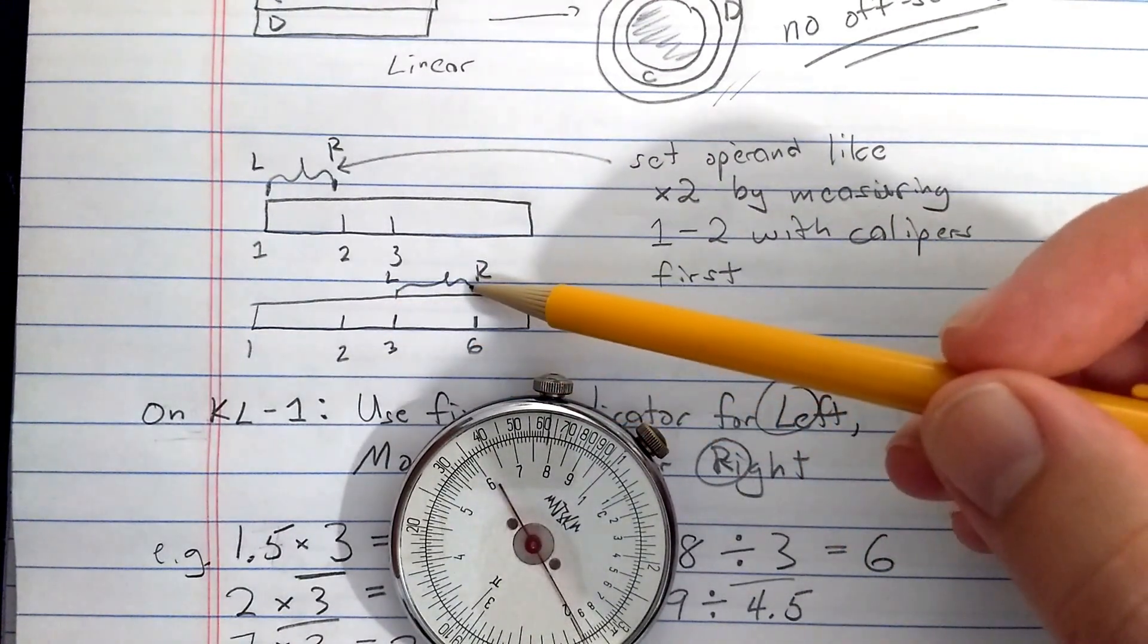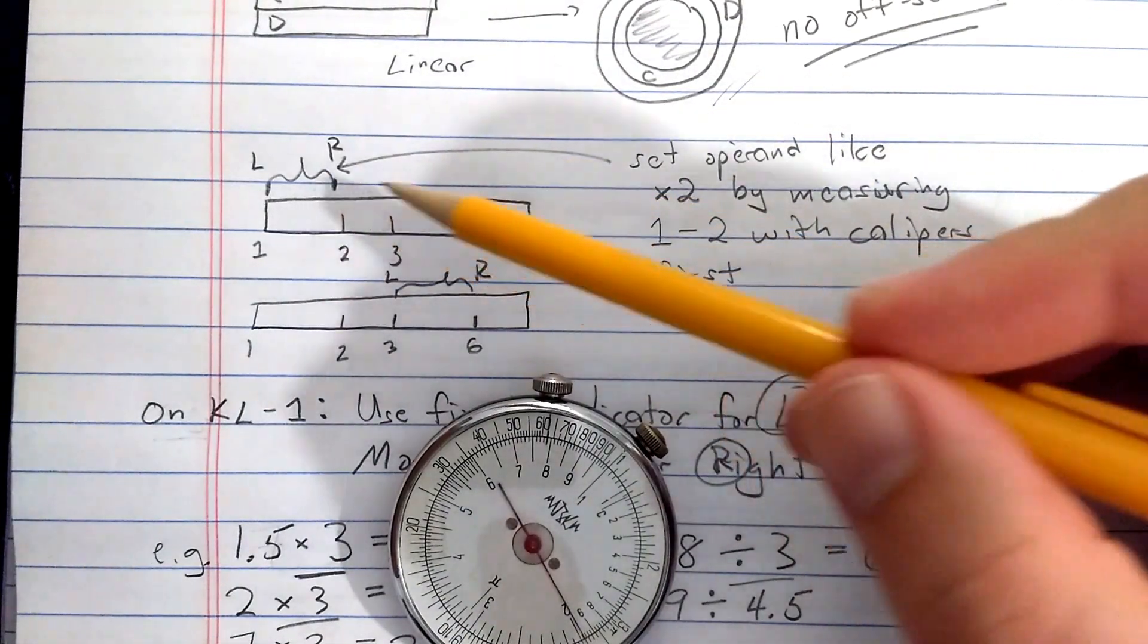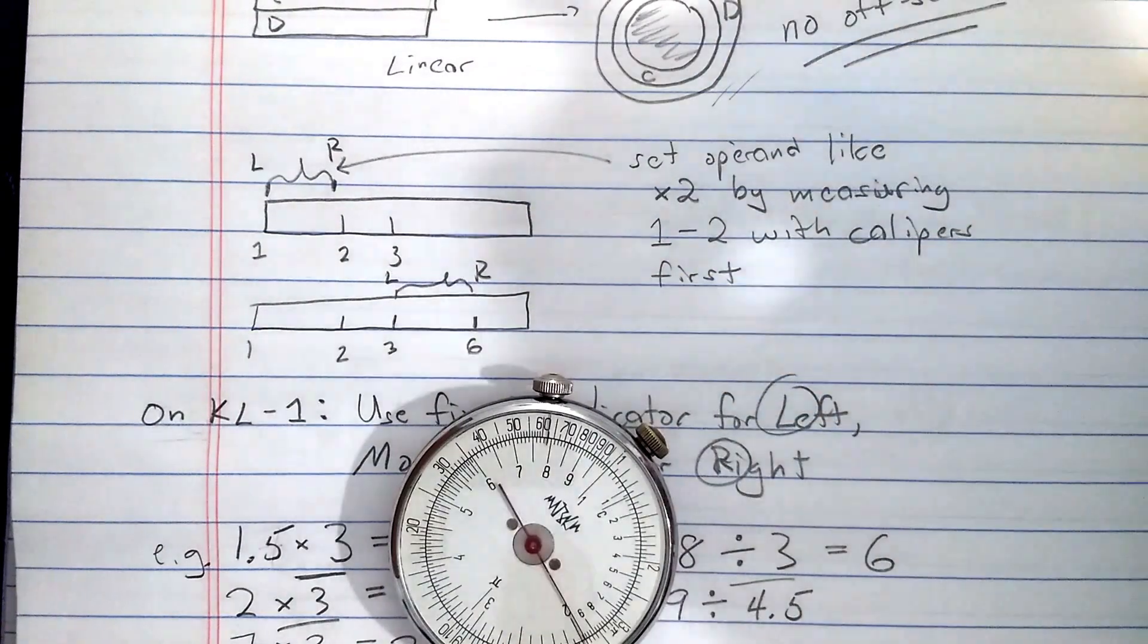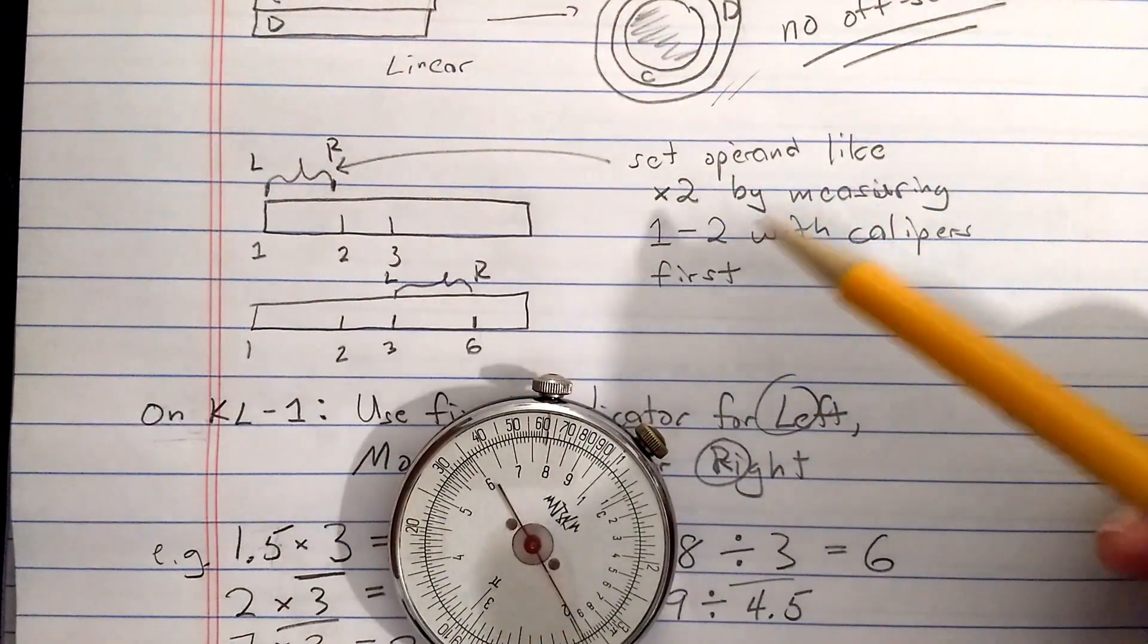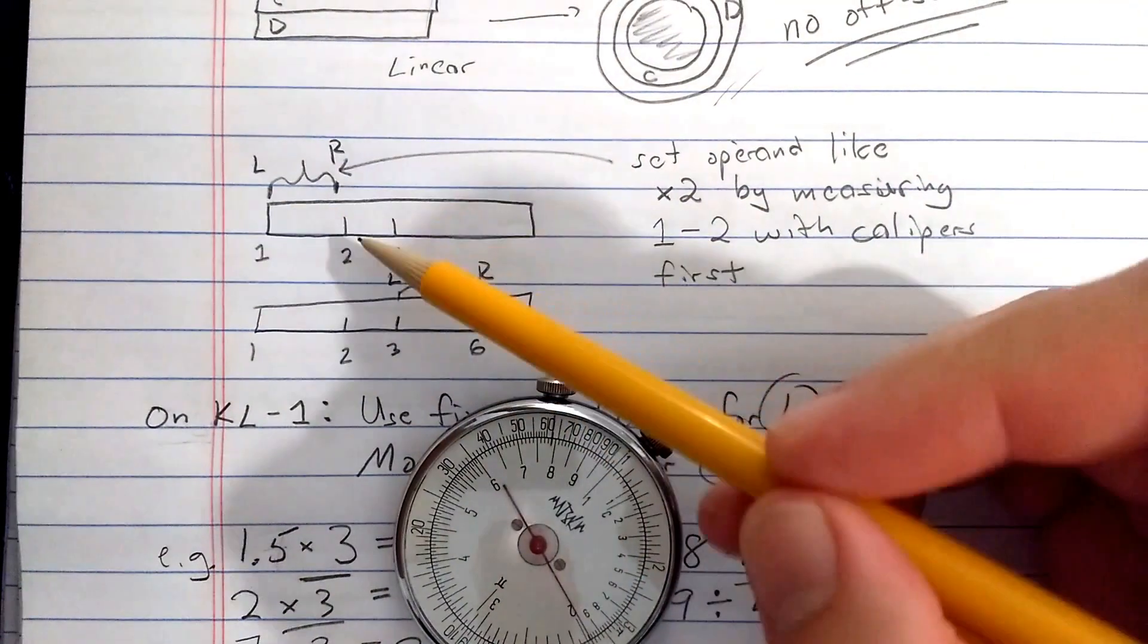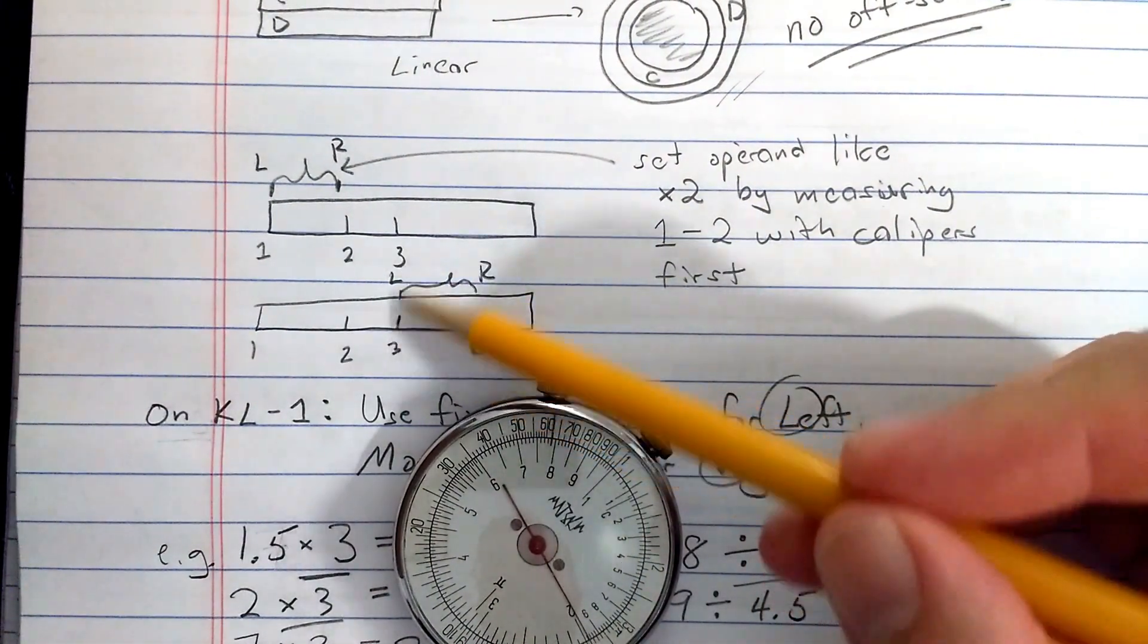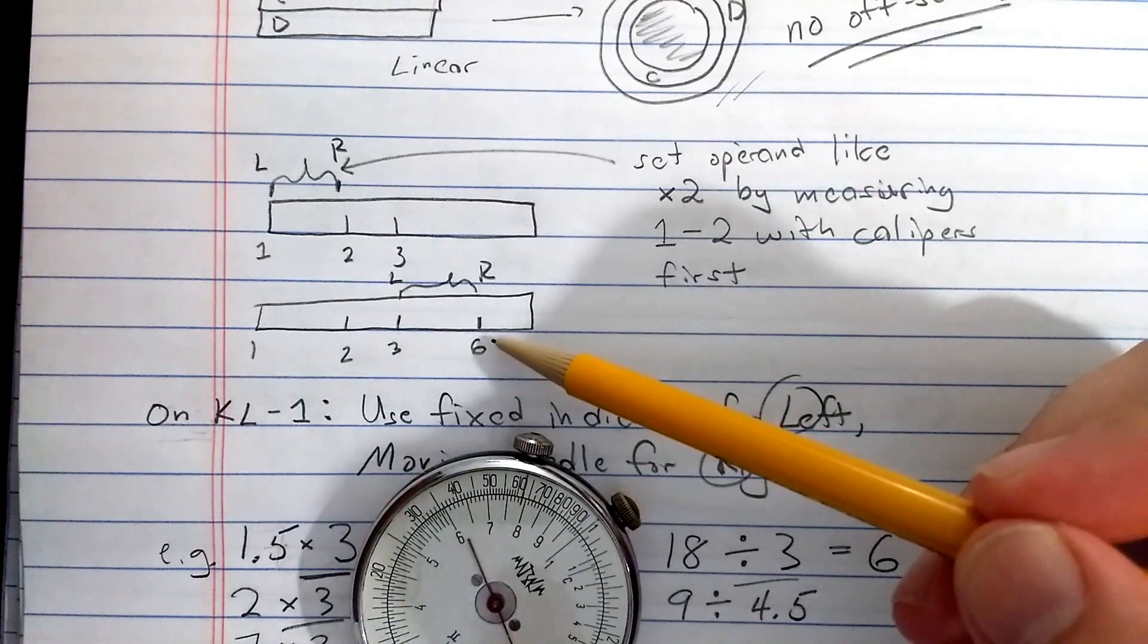Then you set the left end of the caliper against, say, 3. Then measuring out that distance is going to take you to 6 because you've done the same thing you do with the slide roll except you don't have the two logarithmic scales. You have the calipers measuring essentially what I'll call the operand.